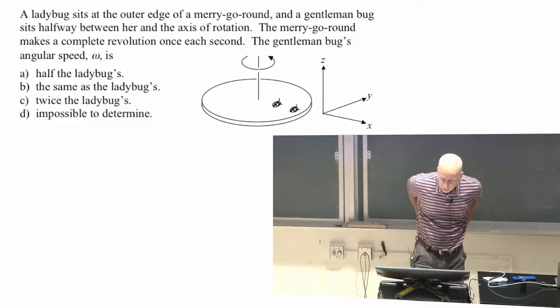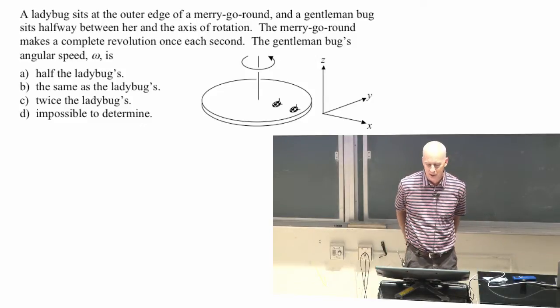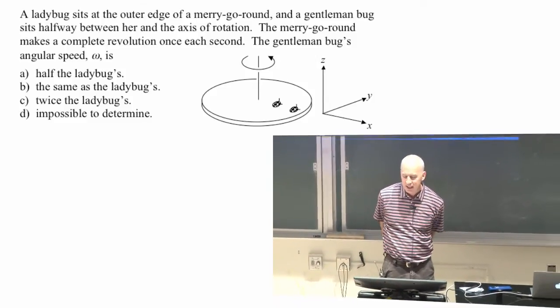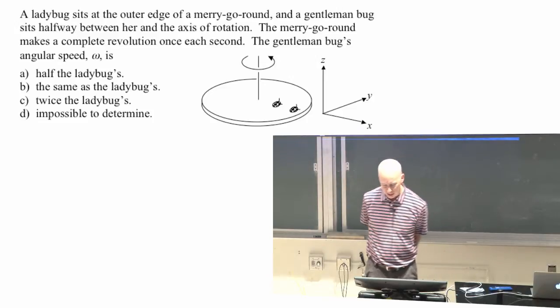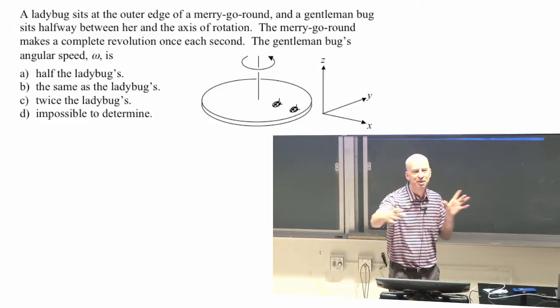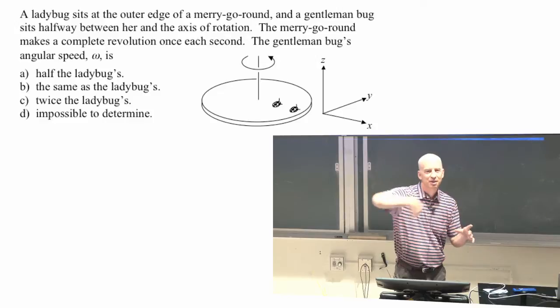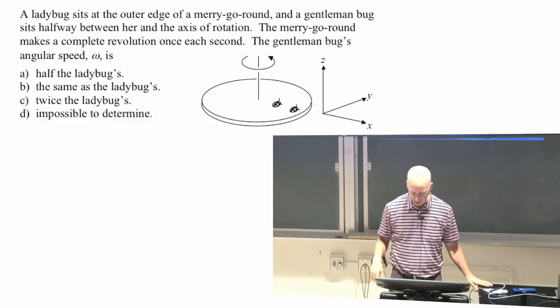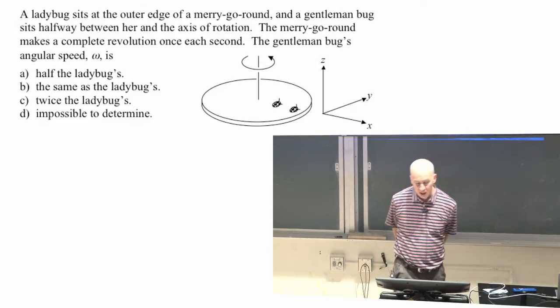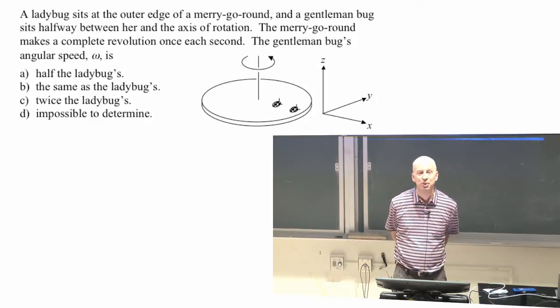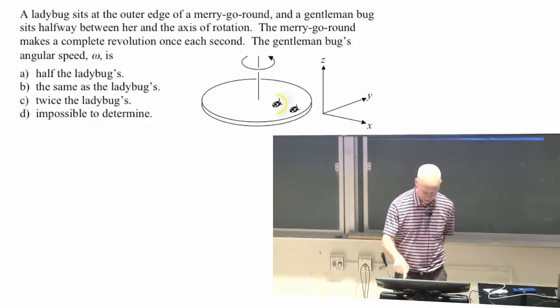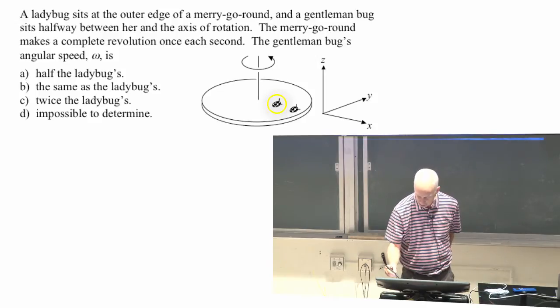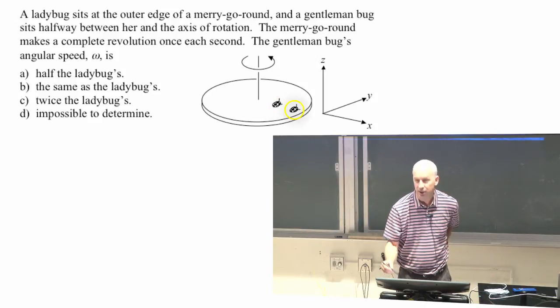So I'm only going to ask you this one question. We'll worry about right hand rules next time. Ladybug sits at the outer edge of a merry-go-round. That's just a platter that's rotating. So this platter rotates around. There's a gentleman bug that's halfway between her and the axis of rotation. So this is the gentleman bug here. That's the lady bug, in case you couldn't tell the difference.